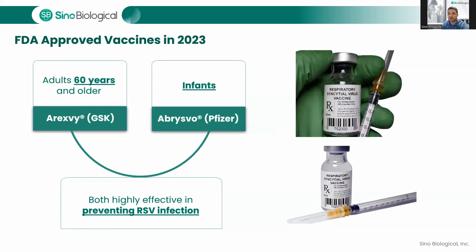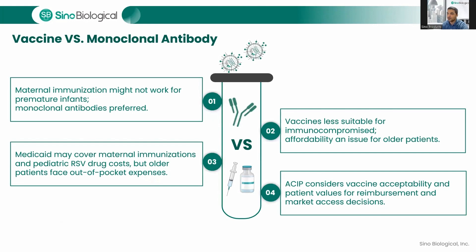The most recent advancements in vaccine development include two vaccines approved in 2023, ten years after the mapping of RSV was published by the NIH. ArexVy by GSK is approved for immunizing adults over age 60, and Abrysvo by Pfizer is approved for infants. Both are highly effective in preventing RSV infections. There are several strategies to combat RSV, and this variation in the drug pipeline raises the question of which form of treatment is more effective or accessible for each patient. For example, maternal immunization may not be effective for infants born prematurely.